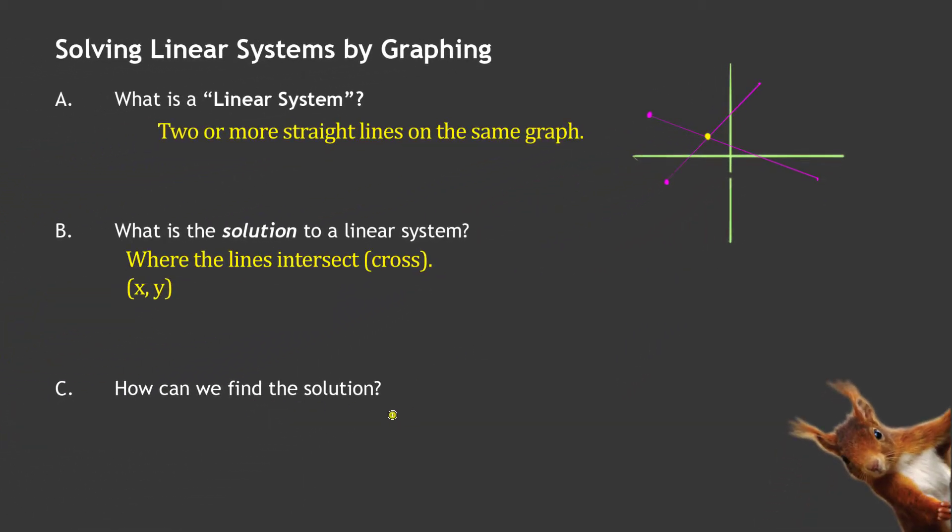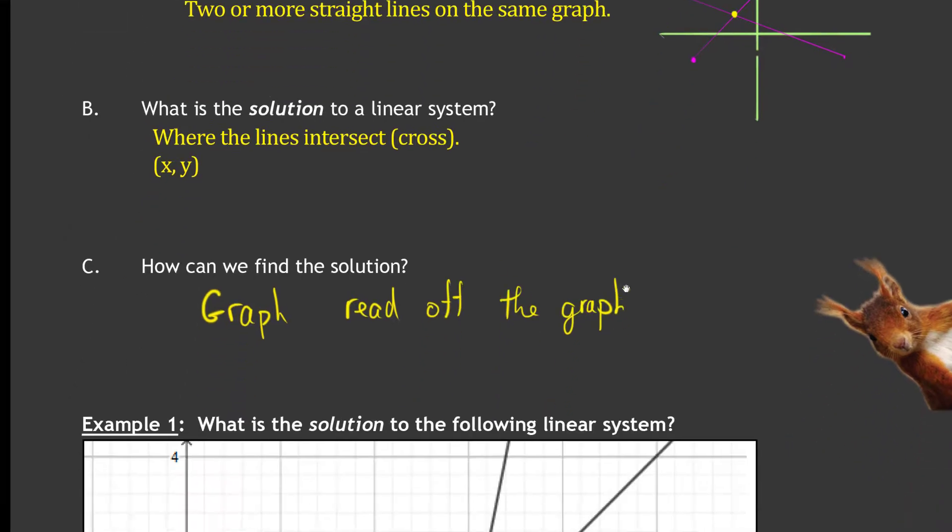Now, that might be hard to read on a graph, and we're going to talk about in future videos how you might do it when it's really hard to read. But hopefully, it's nice, easy, whole numbers. Okay. So how can we find the solution? There are three major ways to find the solution. Now, the first way we're going to do it is we are going to graph the two lines directly and read off the graph. So that's what a linear system is and how we can solve them. Let's put it into practice.